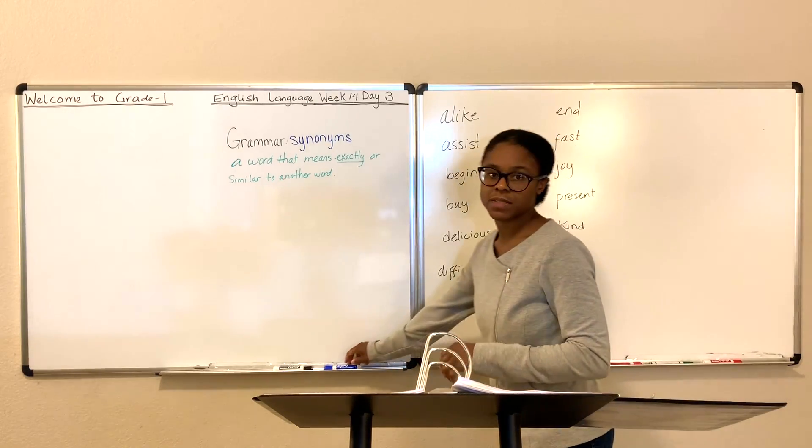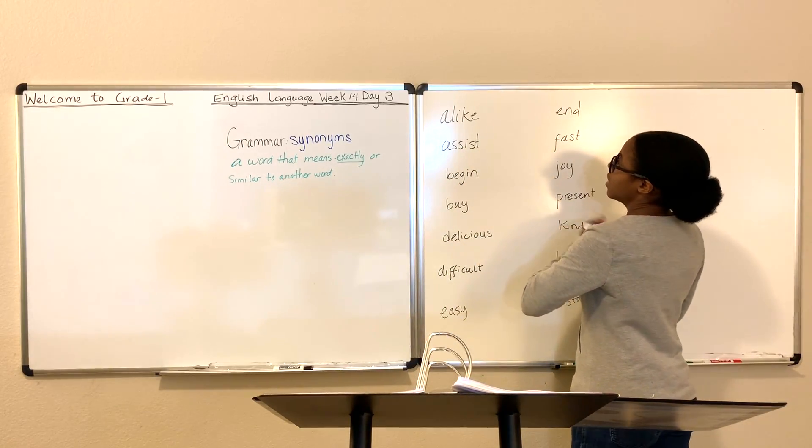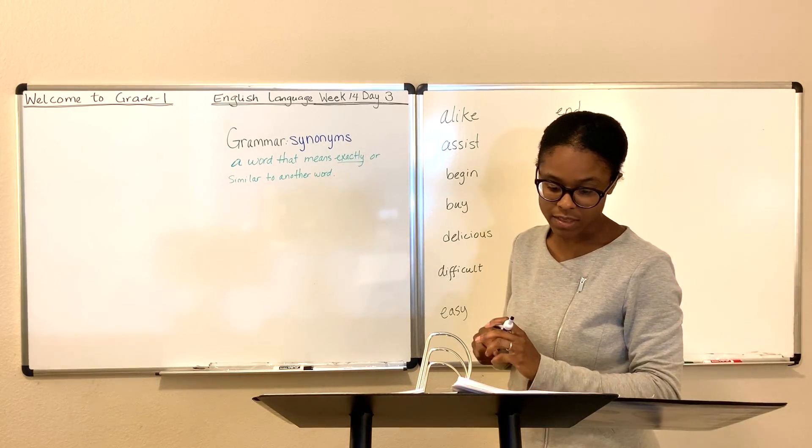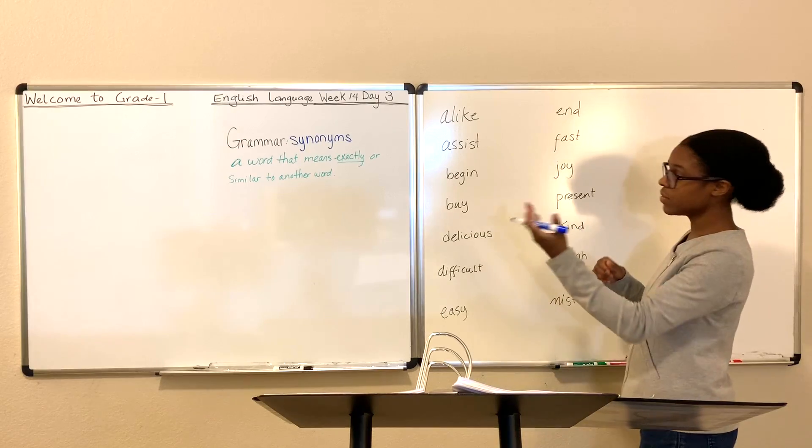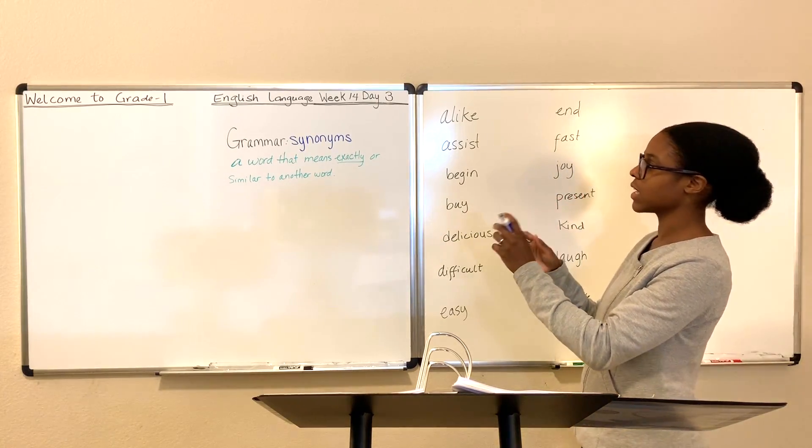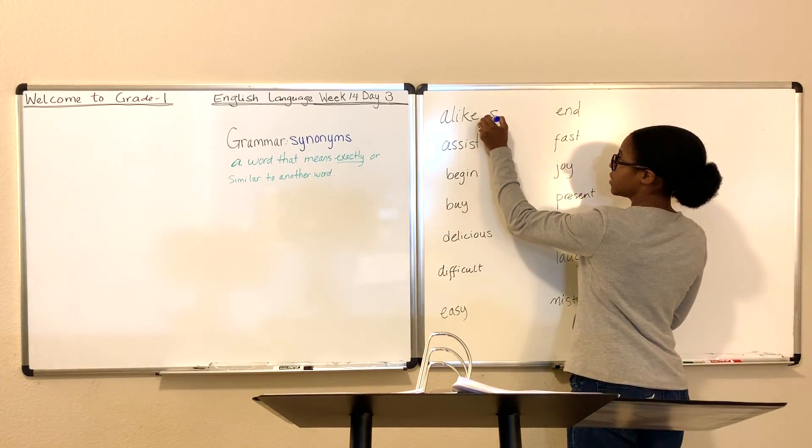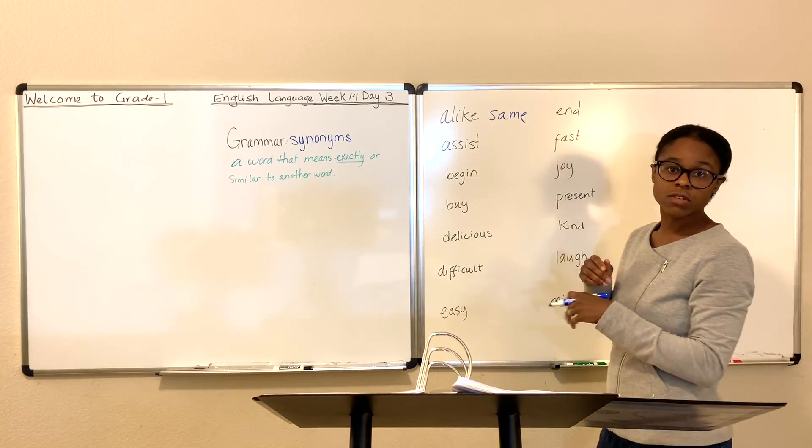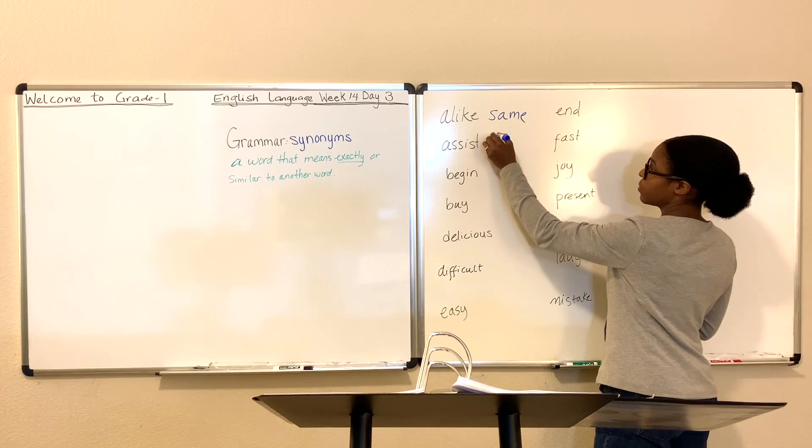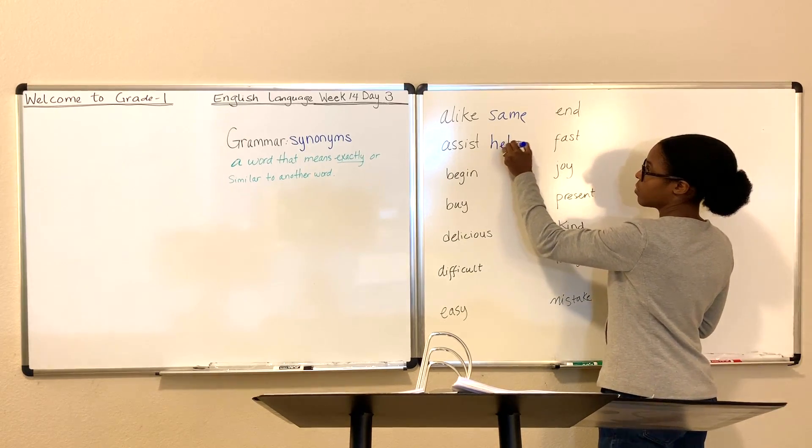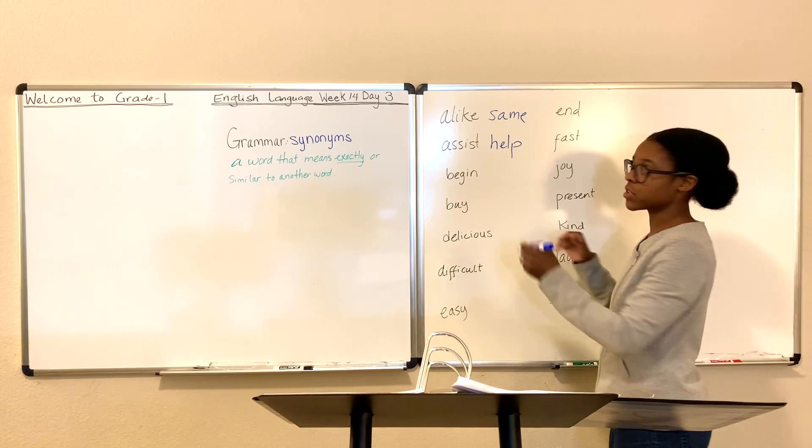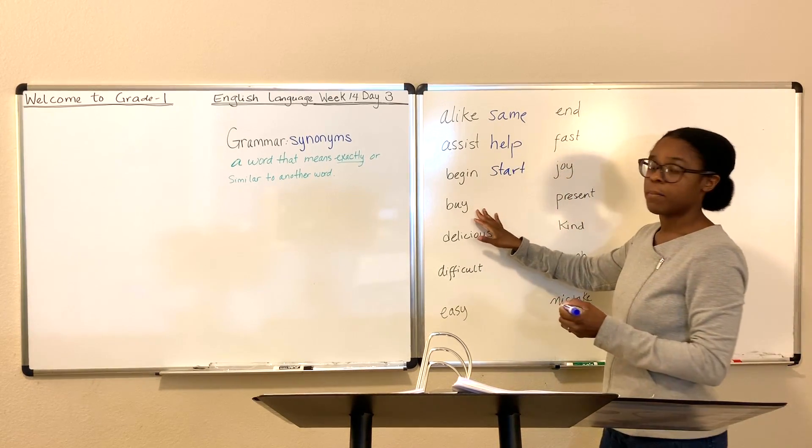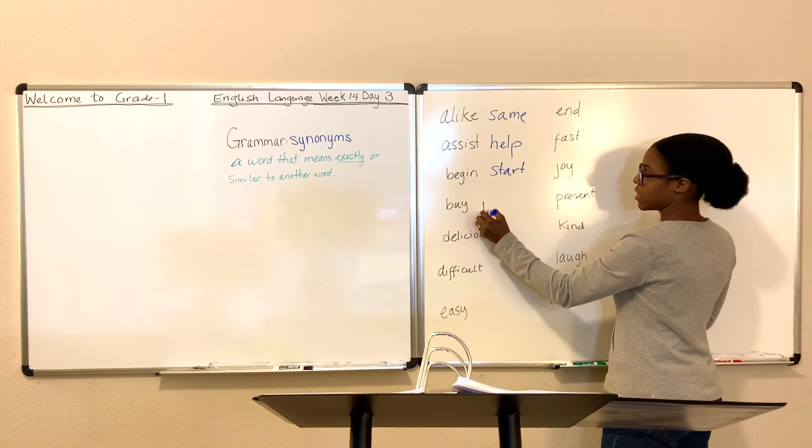See if we can find some synonyms for these. So if I say, these two are alike. What am I saying? I'm saying that these two are alike. These two are the same. If I say, can I assist you? Maybe that also needs help. Can I help you? Can I assist you? Can I help you? What if I say, this is where we begin? This is where we start. Where do we start? Where do we begin? Buy. I need to buy something. Maybe I need to purchase.